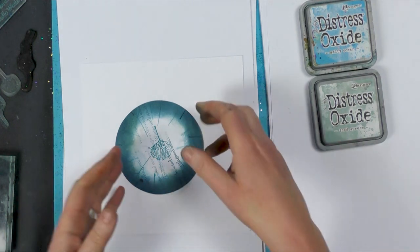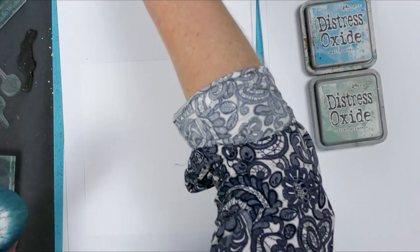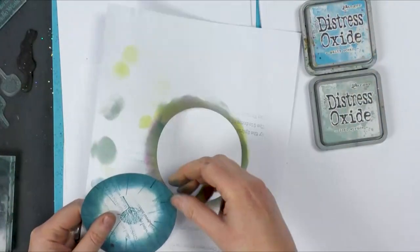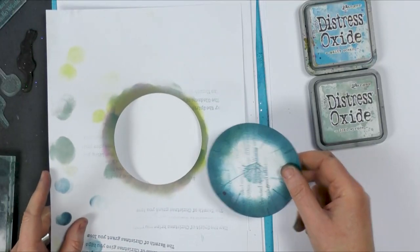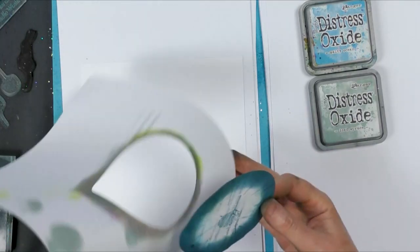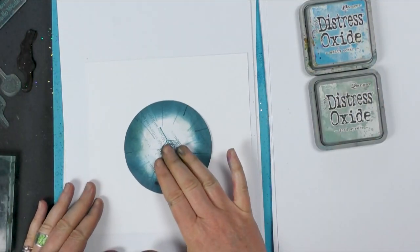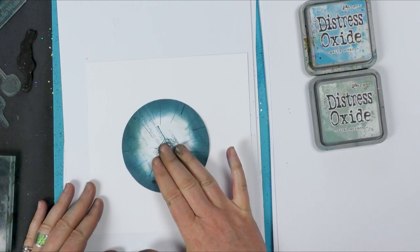We're going to stick with our mask technique using the positive and the negative of the circle that I cut out. This is just using a hole cutter. So I'm going to first of all pop that down round about the center.